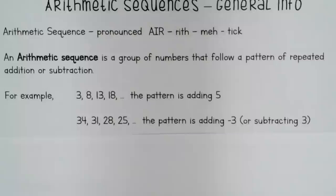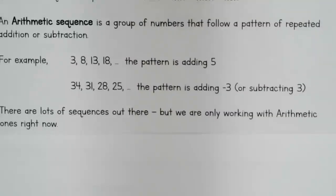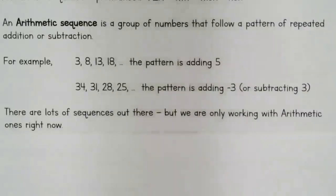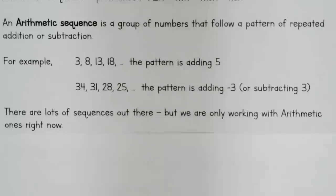Here's another example: 34, 31, 28, 25... this time the pattern is adding negative three, which is the same as subtracting three. This is just reiterating that there are lots of sequences out there. We're only working with arithmetic ones right now, which doesn't mean something isn't another kind of sequence — we're just concentrating on sequences that are arithmetic.